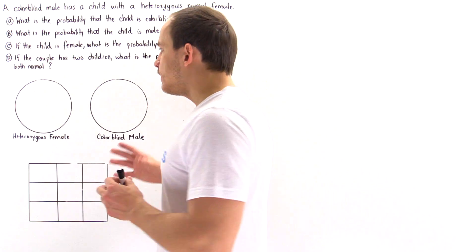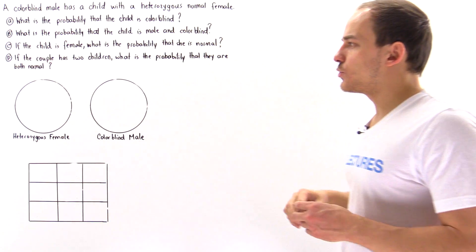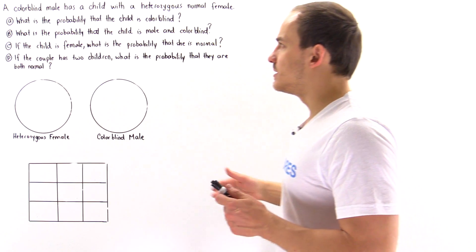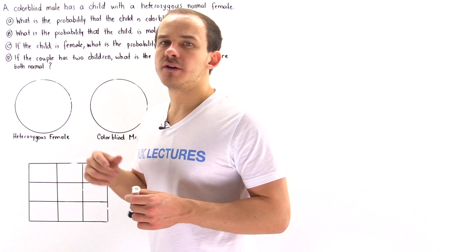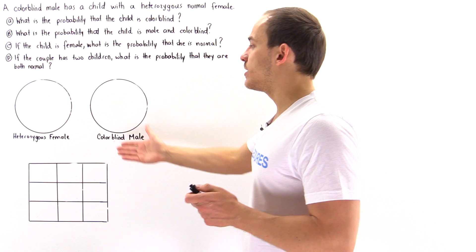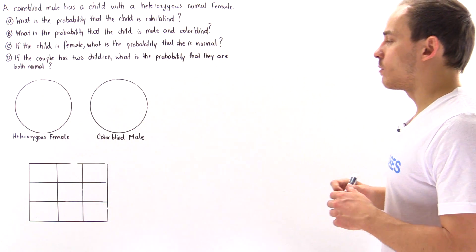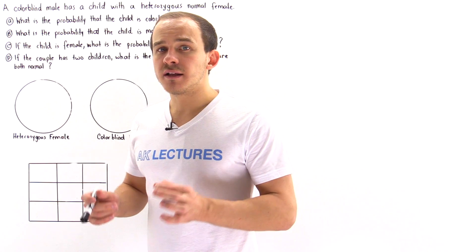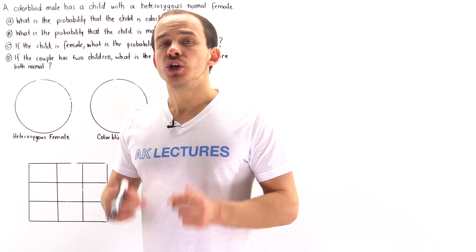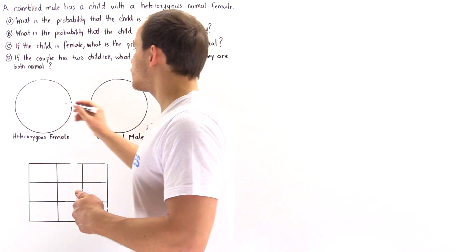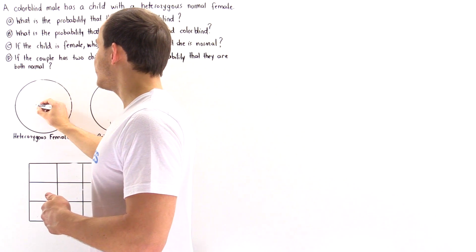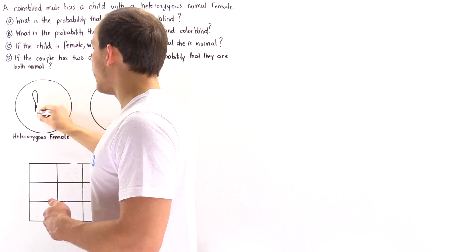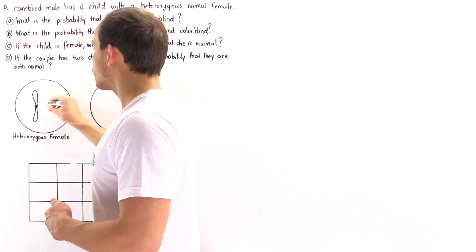Before we actually examine parts A through D, let's determine what the genotype is of each one of our parents. Let's begin with the heterozygous normal female. Remember, the female contains two X sex chromosomes.